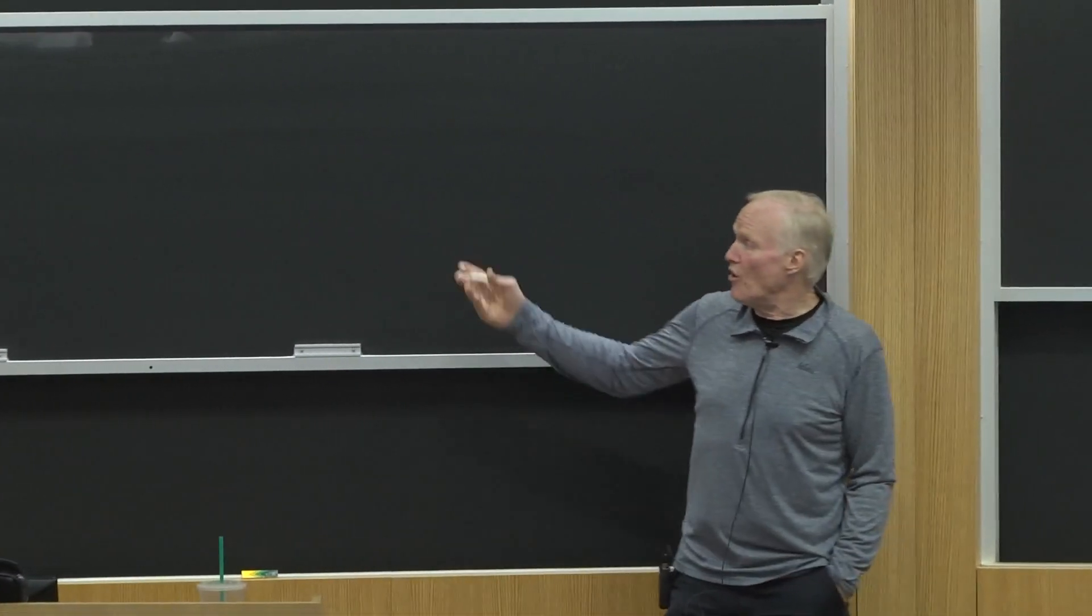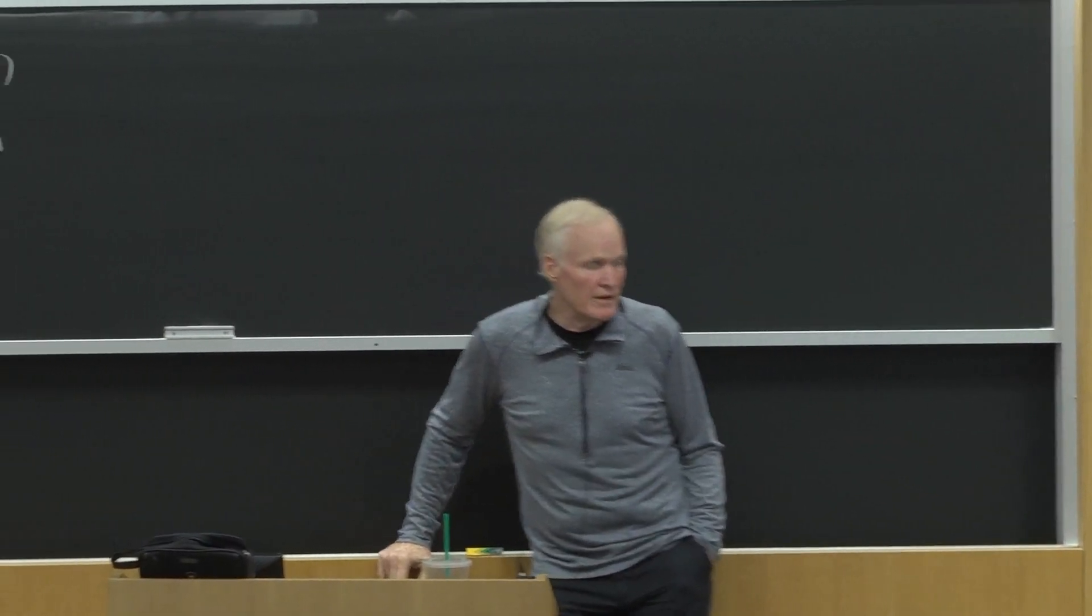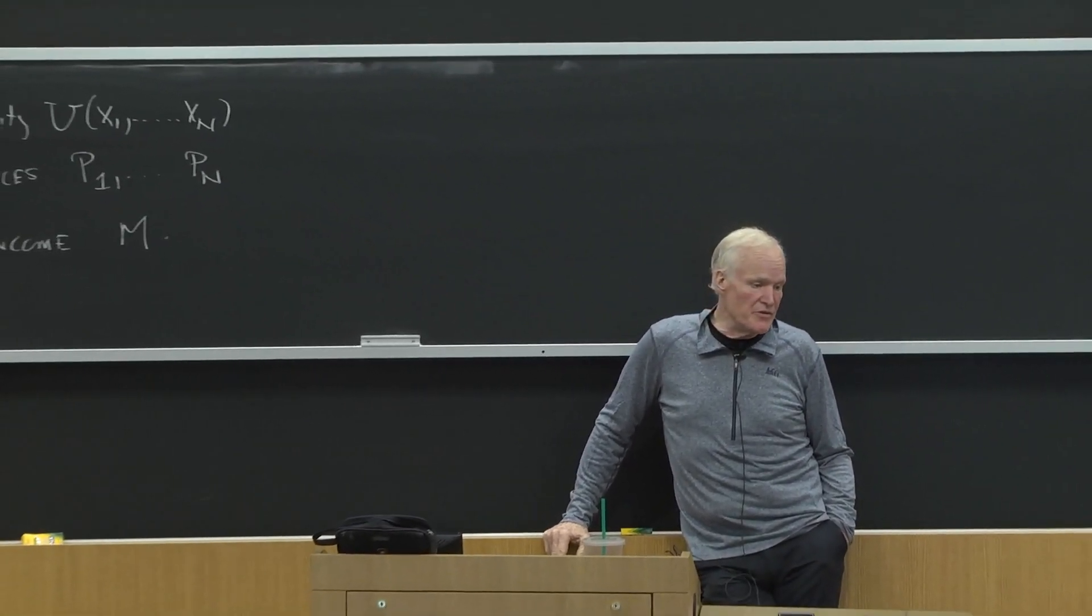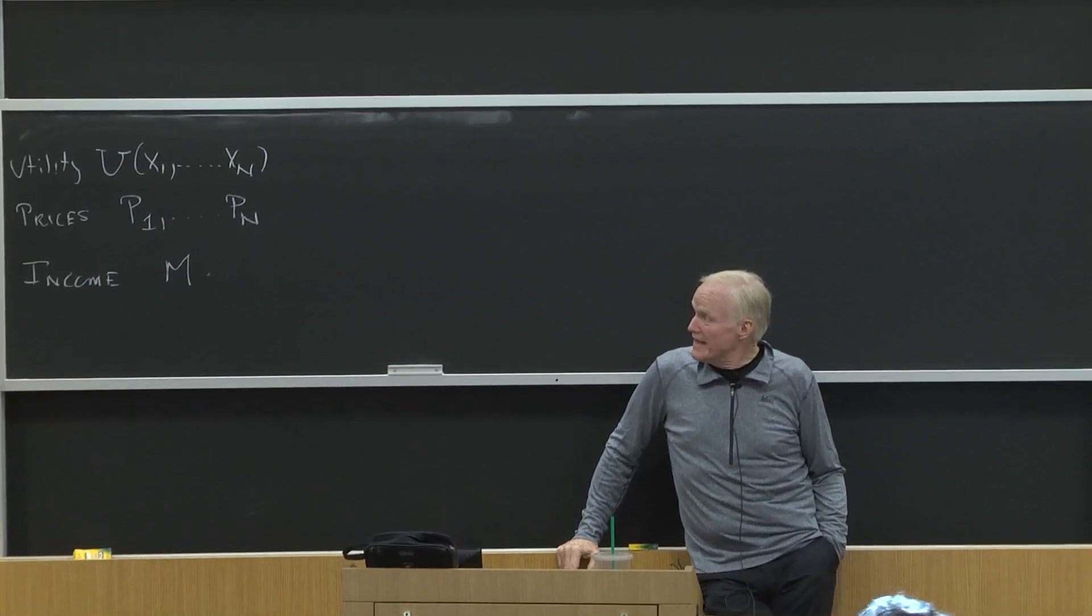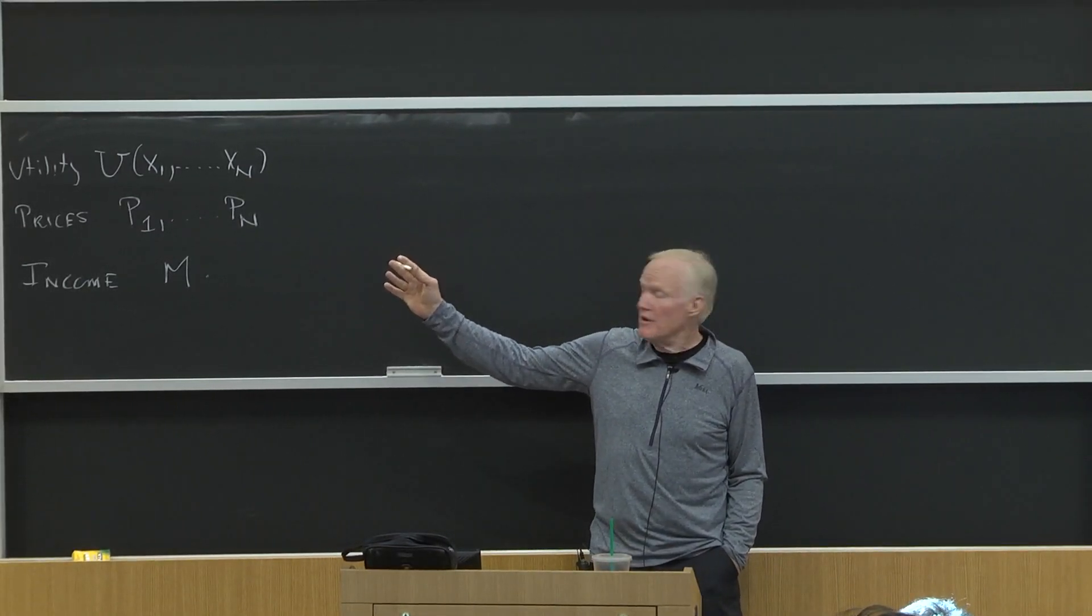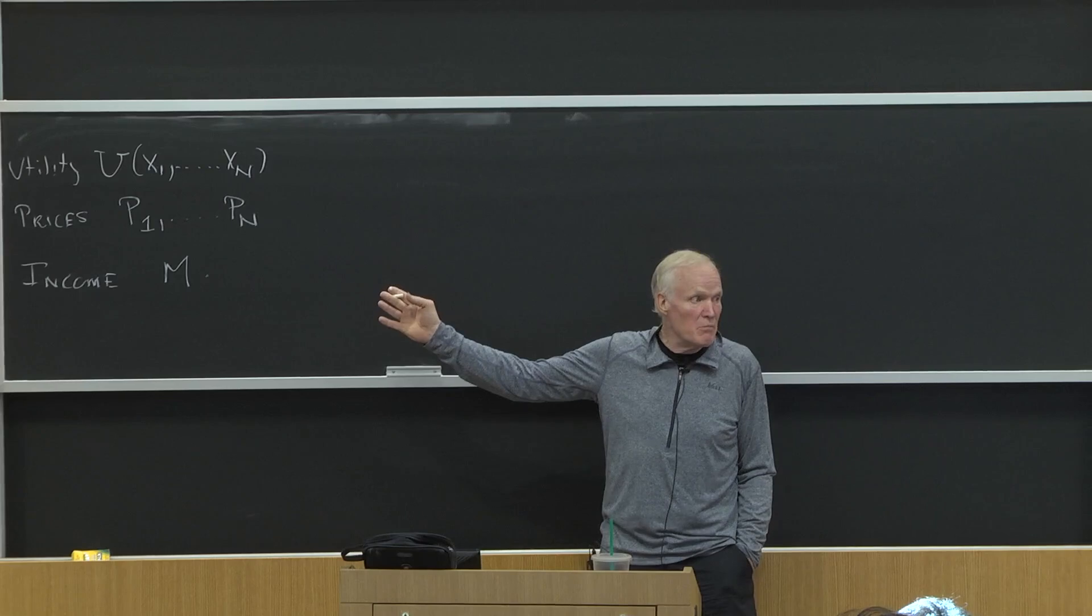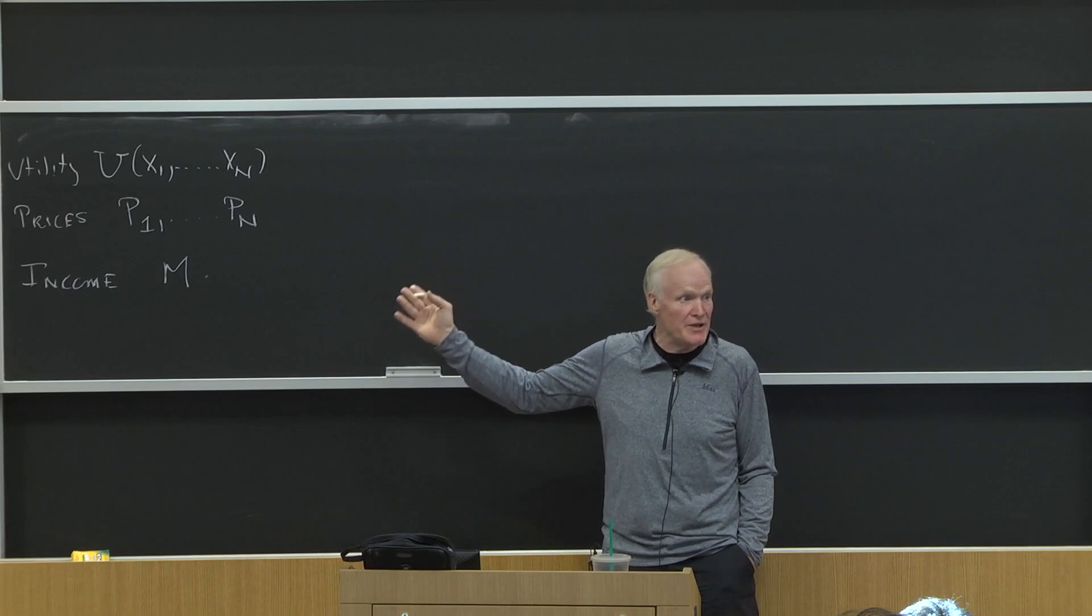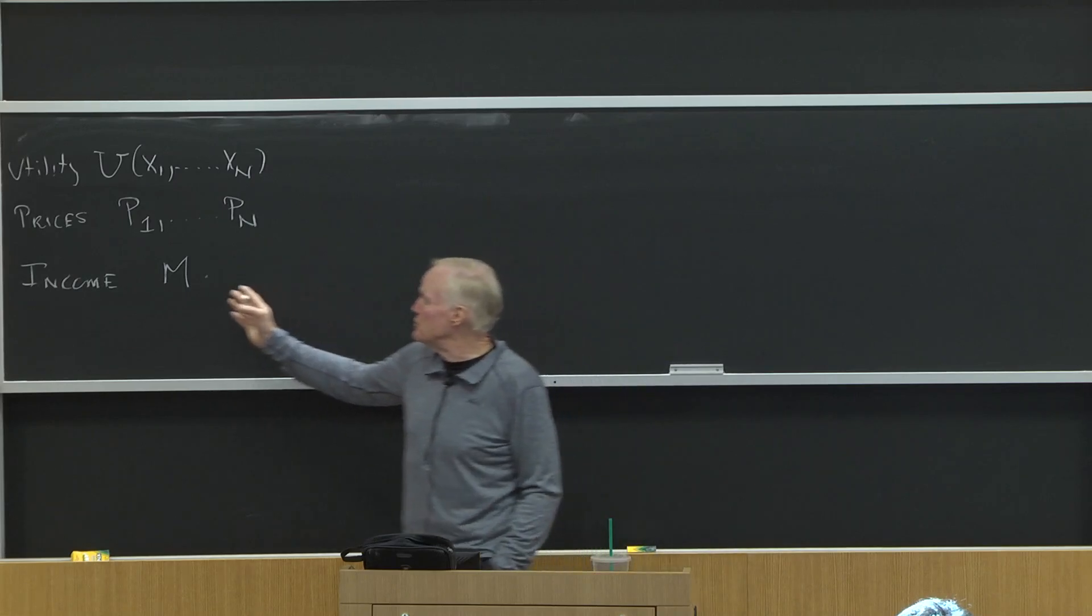And for now, just assume all the prices and income are in dollars. There's another element to the units here. When you're thinking about consumption, you've got to think about the units. The units have to align between these things. For example, when we talk about income, you've got to talk about income per unit time - your weekly income, monthly income, or annual income. It may not matter too much which of those you use, but it determines the units in which X are measured.